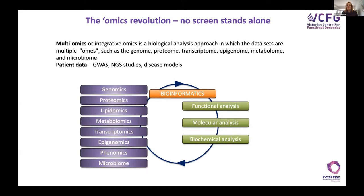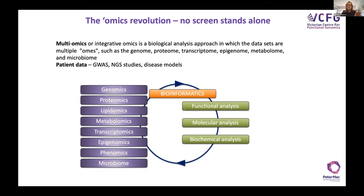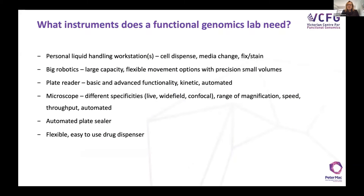Functional genomics is one part of the multi-omics picture — multi-omics, integrative omics. If we sequence, we need to know the functional outcome; we need to overlay lipidomics, proteomics, metabolomics. We also suggest overlaying screen outcomes with patient data from public databases to focus down the hit list and get to the end game faster.